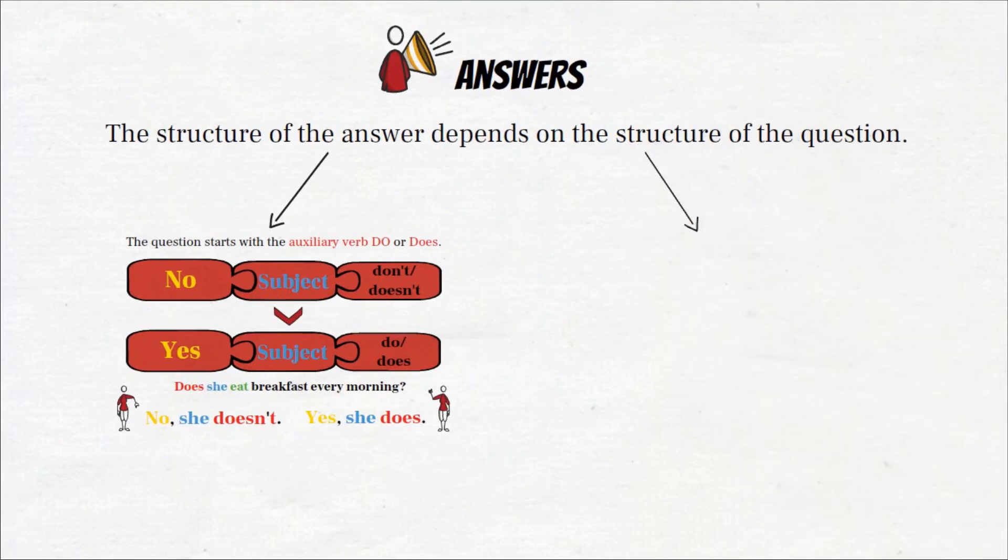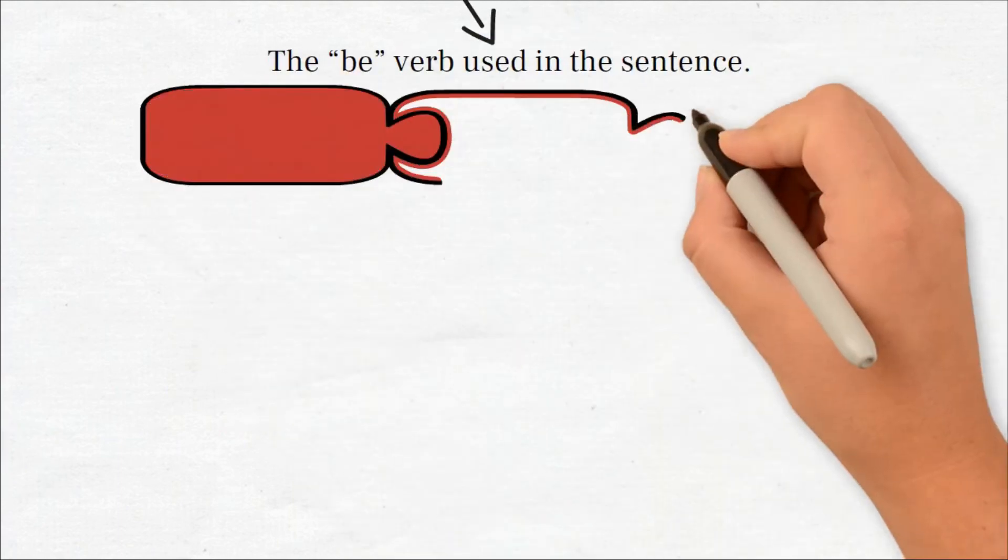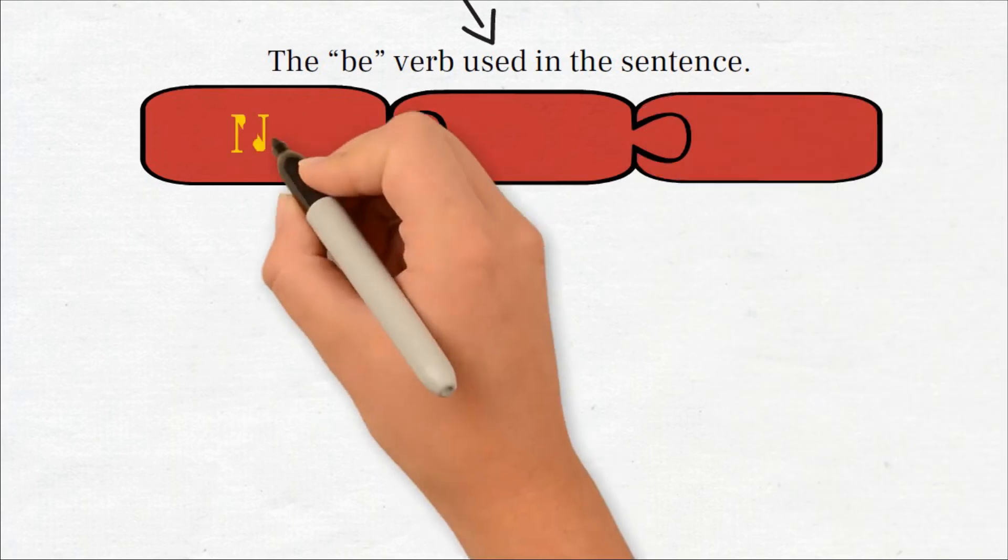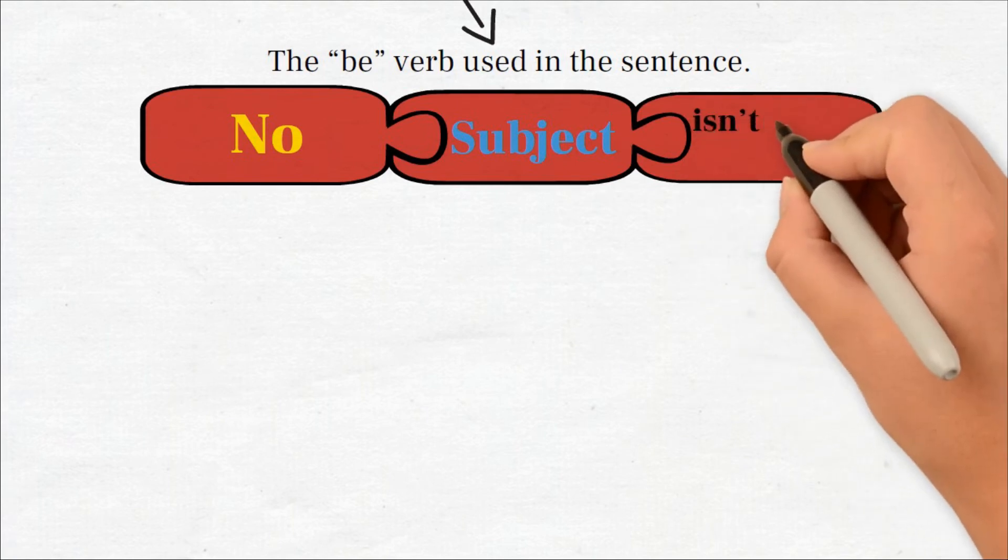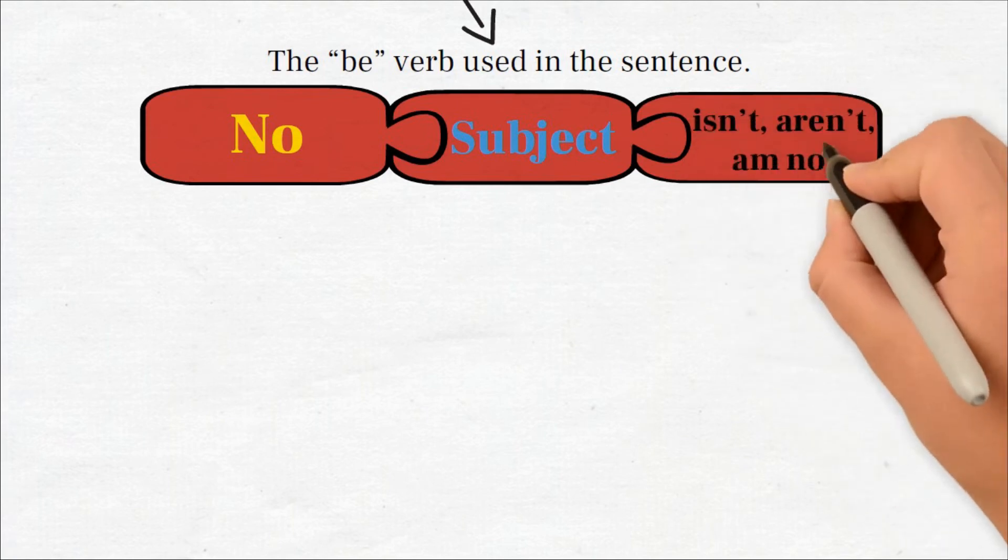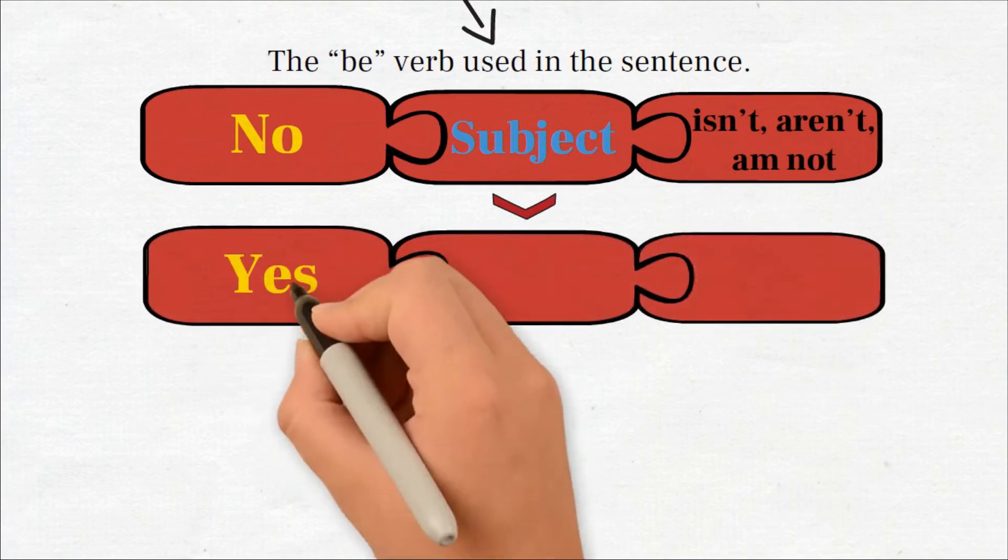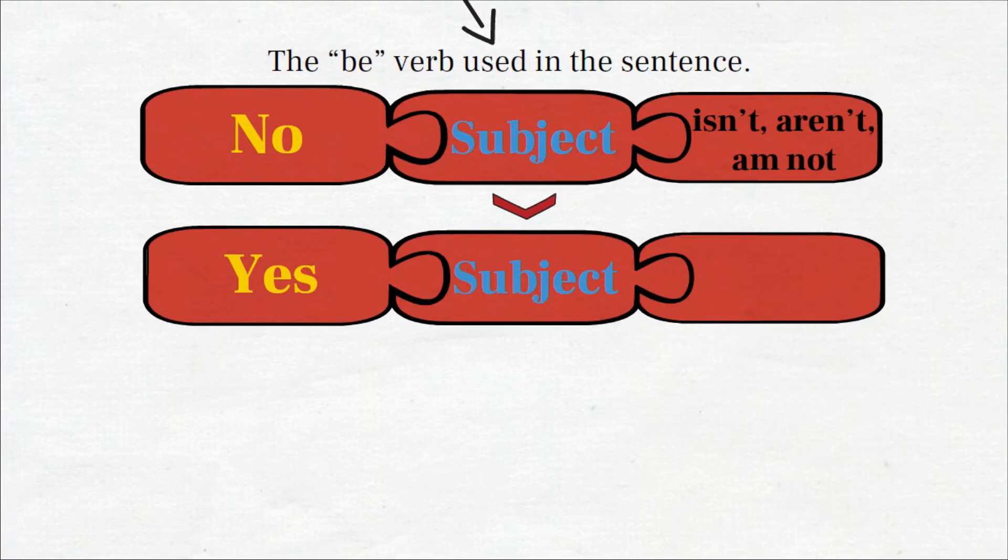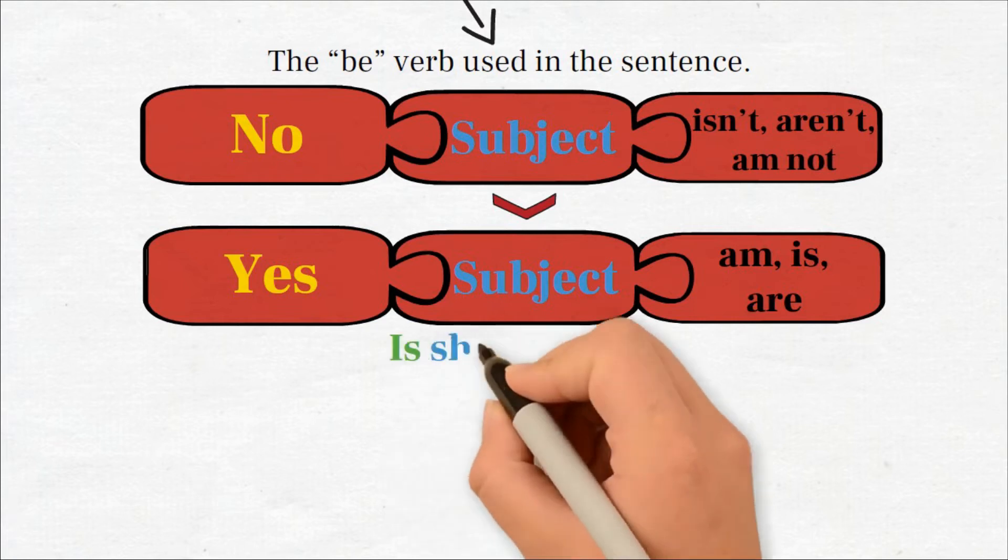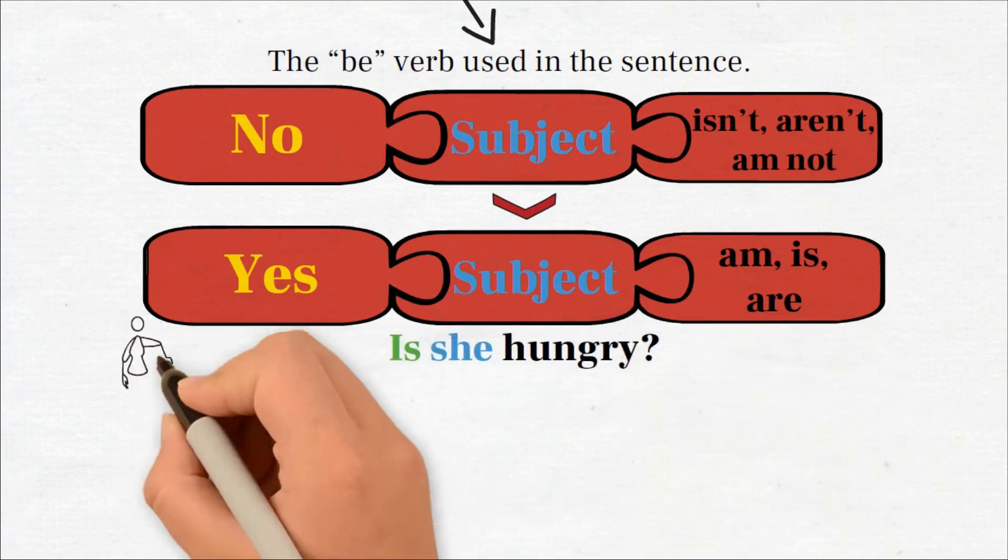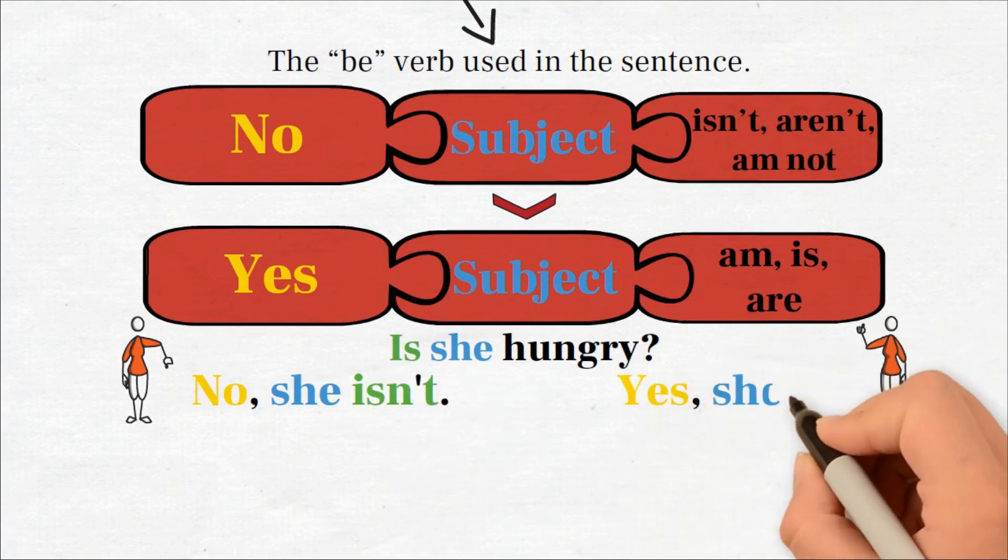If, however, there is the be verb used in a sentence, the structure looks like this: no, subject, isn't, aren't, or am not. Or yes, subject, am, is, are. Is she hungry? No, she isn't. Or yes, she is.